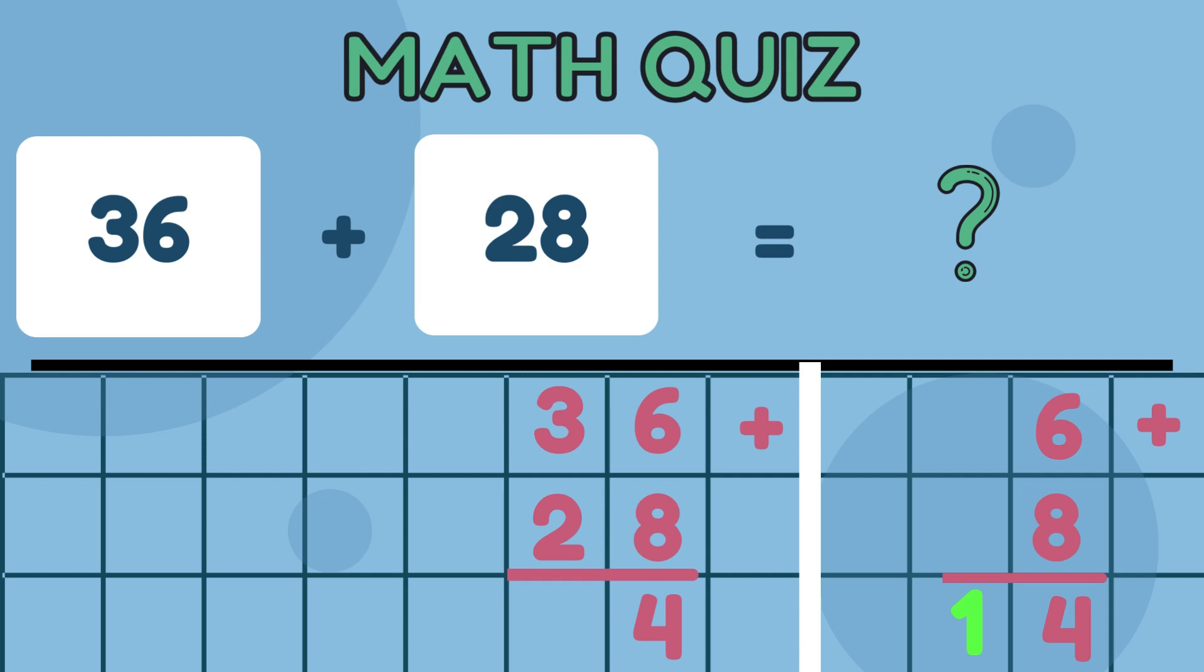Since 14 is a two-digit number, we transfer the value of the 10's place, in our case the digit 1, to the next step. Step 2.